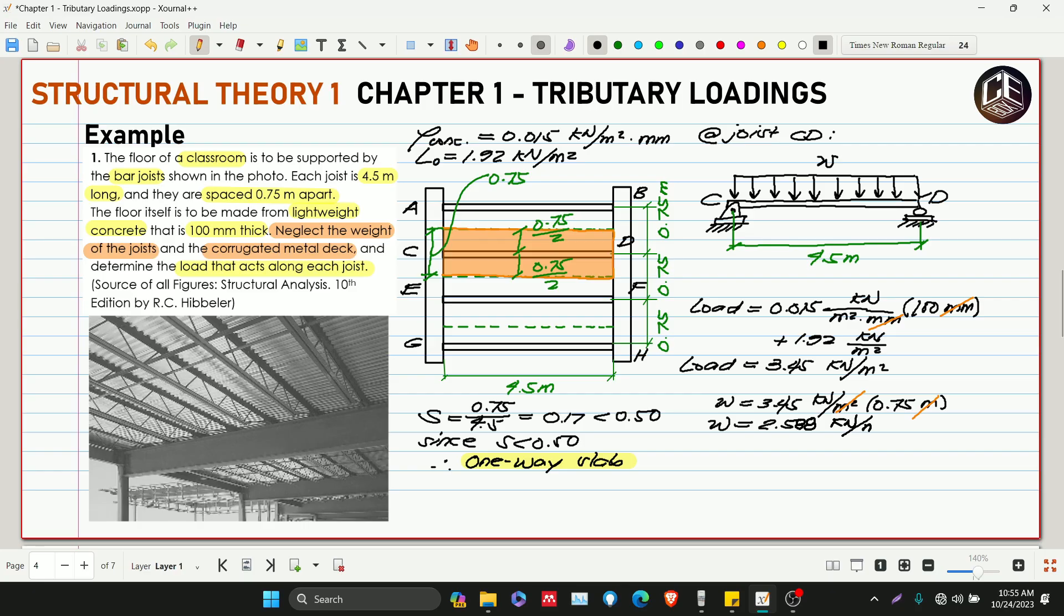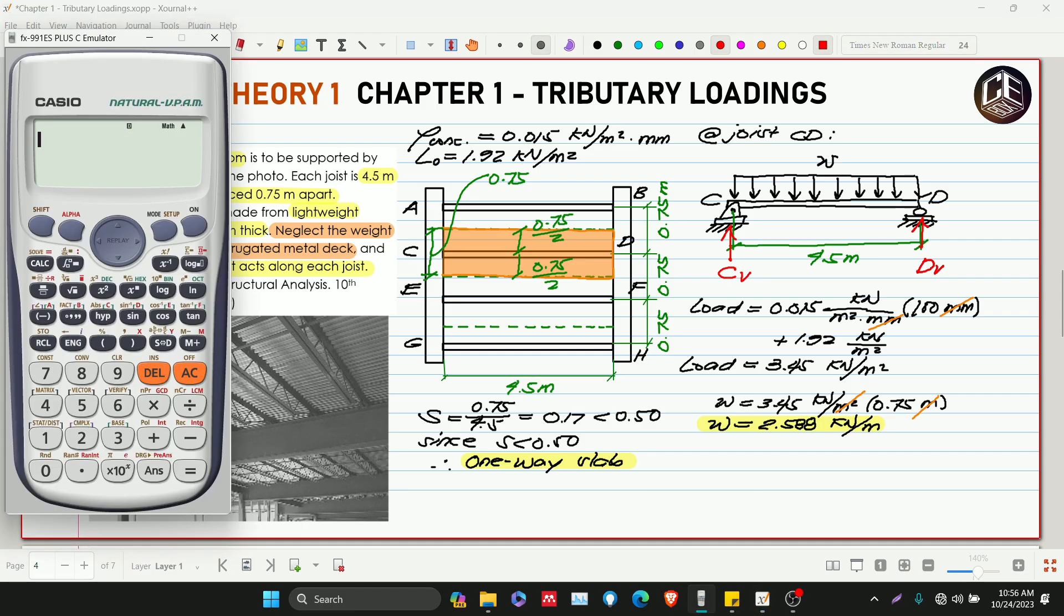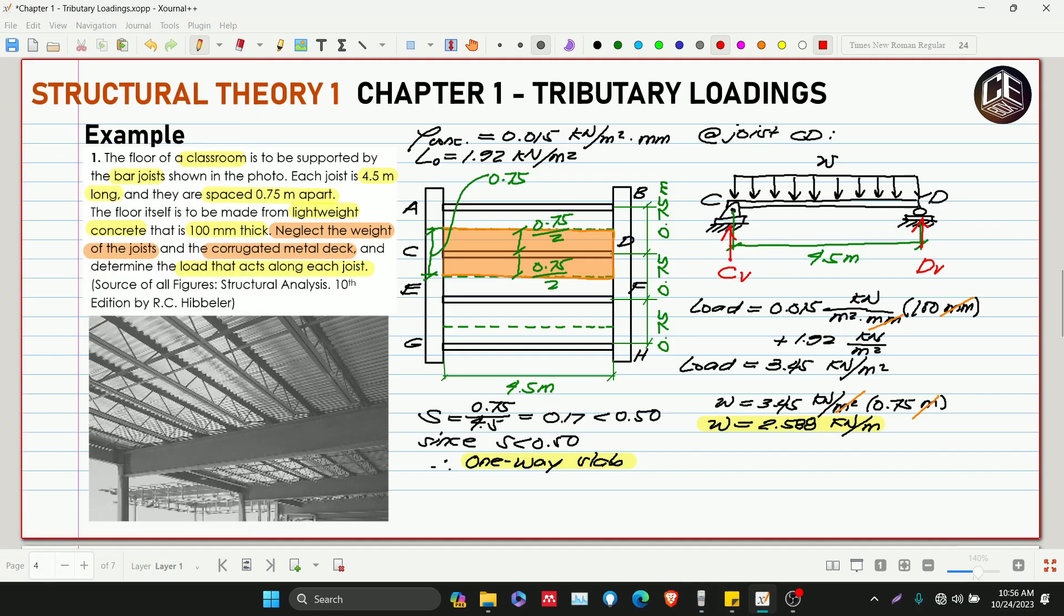The remaining loading is 3.45 multiplied by 0.75, which equals 2.588 kilonewtons per meter. This is our W. We can now get the reactions at C and D. This is Cv and this is Dv. By equilibrium condition, it's very easy to solve. The load is 2.588, and we're symmetrical in loading and symmetrical in support, so that's 2.588 multiplied by 4.5 divided by 2, which equals 5.823 kilonewtons.